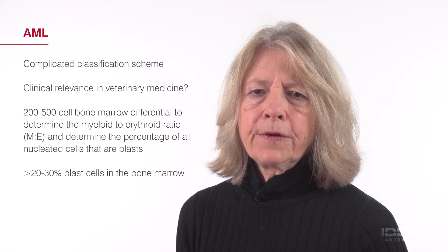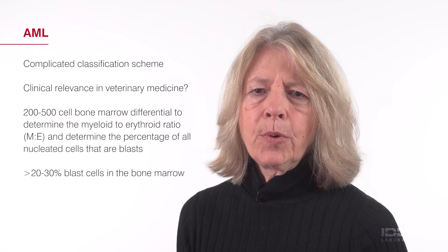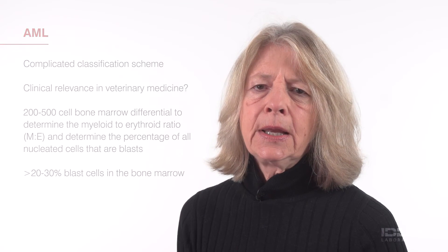Chronic myeloproliferative disease in people comprises several diseases, including chronic myelogenous leukemia, or CML, chronic neutrophilic leukemia, eosinophilic leukemia, hypereosinophilic syndrome, and polycythemia vera, among others. The classification likely is similar in dogs and cats, but the diagnoses are not always used consistently.